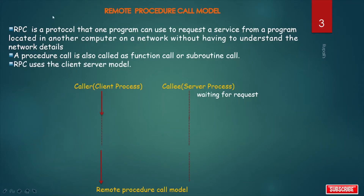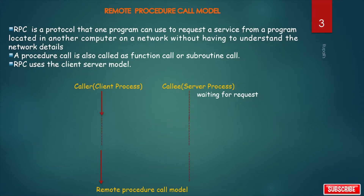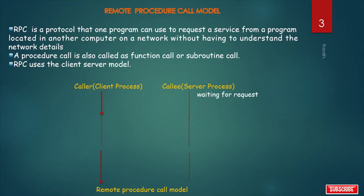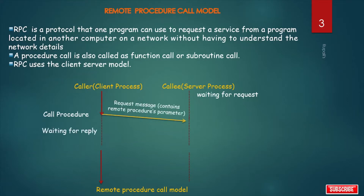There are two processes: one is the client process — it is the caller — and another is the server process, which is the callee. The server process waits for a request. First, the calling environment is suspended. Procedure parameters are transferred across the network to the environment where the procedure is to execute, and the procedure is executed there. The client process calls a procedure and goes to a waiting-for-reply state.